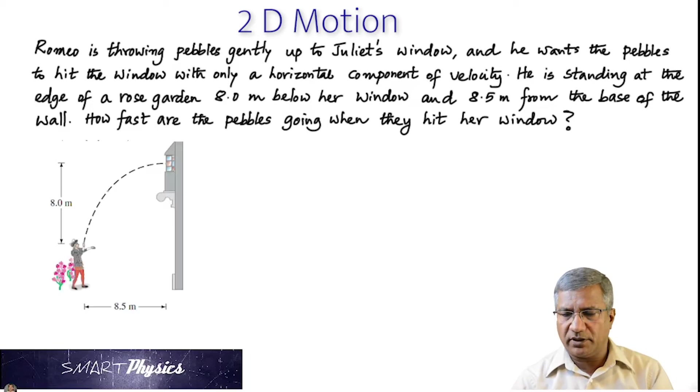So let's try to do this. First of all, here is the picture, the diagram. So that is Romeo and he is throwing pebbles and it hits the window horizontally. So this is the 8 meter, the height of the window from where he is throwing the pebbles. And he is 8.5 meters away from the wall on which the window is.